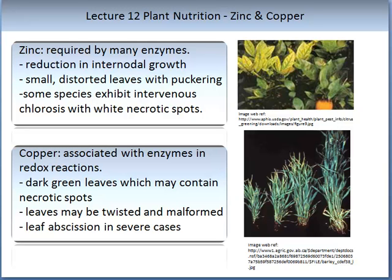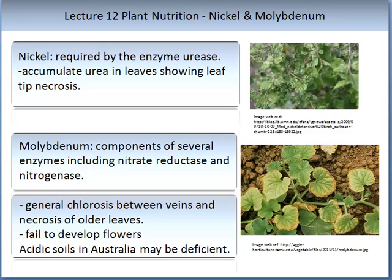Copper is associated with enzymes in redox reactions. When copper is deficient, as shown in the image of barley, dark green leaves containing necrotic spots can be observed. Leaves may be twisted and malformed, and leaf abscission in severe cases can occur. Nickel is required by the enzyme urease. When deficient, you see accumulation of urea in the leaves showing leaf tip necrosis. The image on the top right shows nickel deficiency in birch leaves.